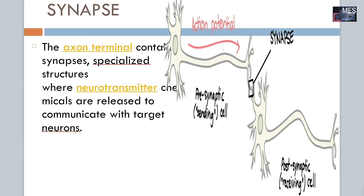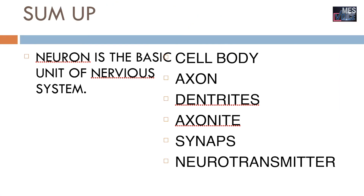Synapse is another important aspect when we think of communication between neurons. The axon terminal contains synapses — specialized structures where neurotransmitter chemicals are released to communicate with target neurons.